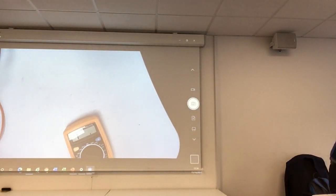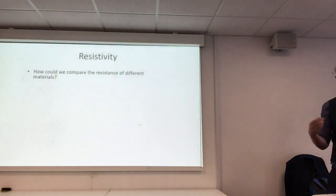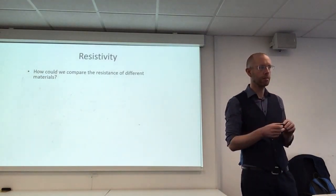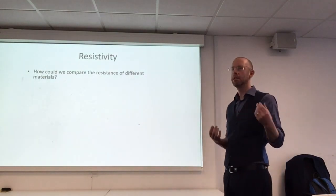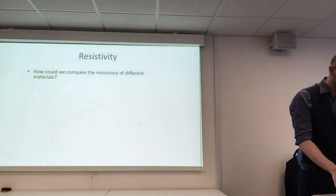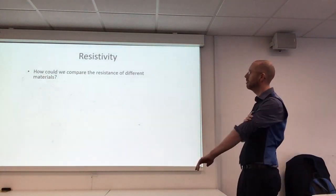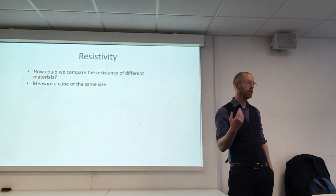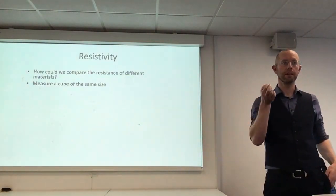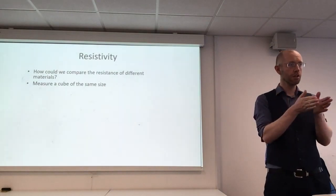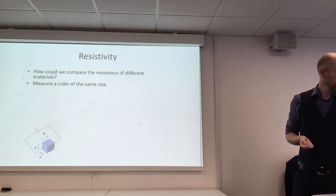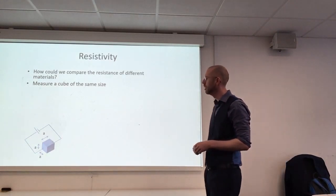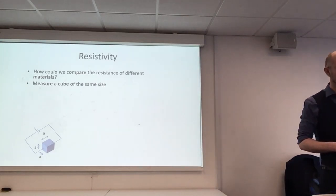The idea of resistivity is that we want a number specific to a particular material that tells us how good it is at conducting electricity. But just measuring the resistance isn't good enough, because we can get completely different measurements depending on the shape of the thing. So how can we compare the resistance of different materials? We could measure the same size — get a cube exactly the same size for all the different materials we want to compare, connect it up to a circuit, apply a voltage, measure the current, and get the resistance of that cube.